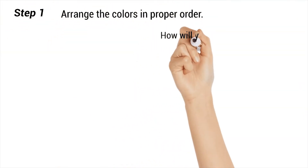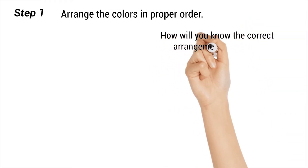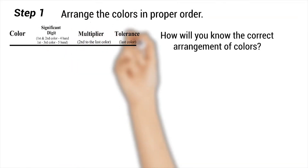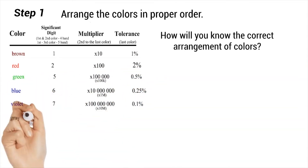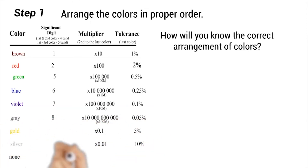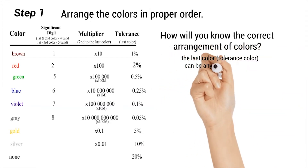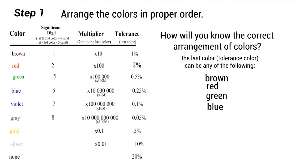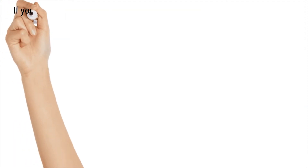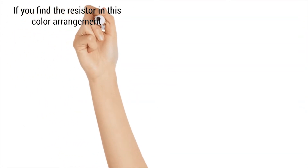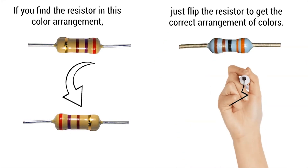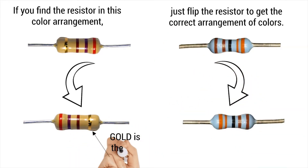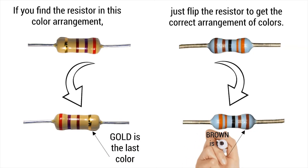Step one: arrange the colors in proper order. To know the correct arrangement of colors, on the resistor color code chart you will see colors with tolerance values. Know the tolerance colors and place them as the last color. The tolerance color can be any of the following: brown, red, green, blue, violet, gray, gold, silver, and none. If you find the resistor in the wrong color arrangement, just flip the resistor to get the correct arrangement. For the four-band resistor, gold is the last color. For the five-band resistor, brown is the last color.